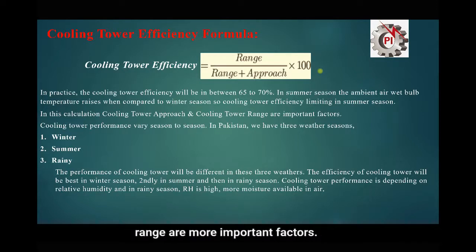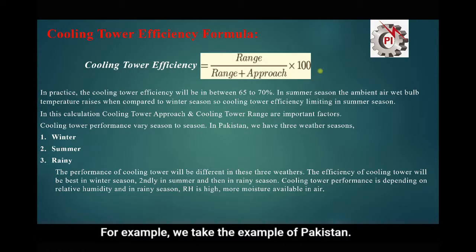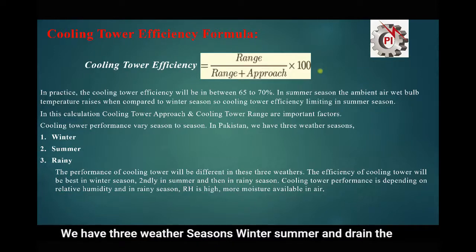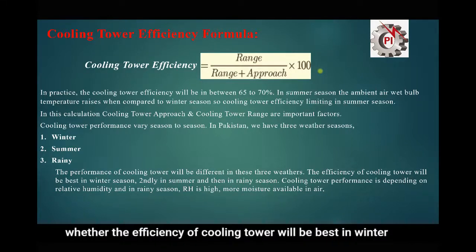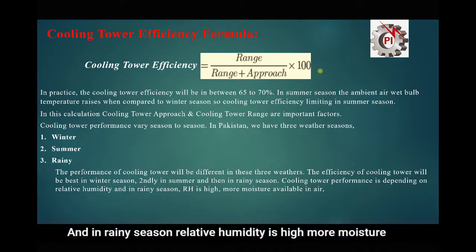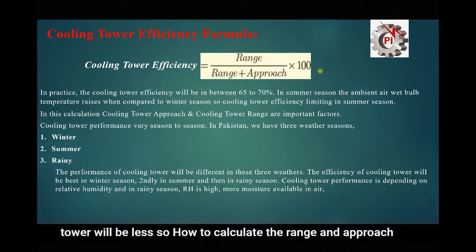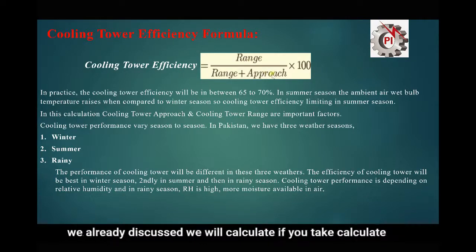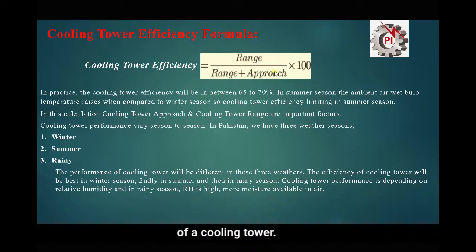Cooling tower performance varies season to season. Taking Pakistan as an example, there are three weather seasons: winter, summer, and rainy. The efficiency of the cooling tower is best in winter, second in summer, and lowest in rainy season. In rainy season, relative humidity is high — more moisture is available in the air — so cooling tower efficiency is least. By calculating range and approach and applying the formula, we can calculate the efficiency of the cooling tower. Thank you very much.